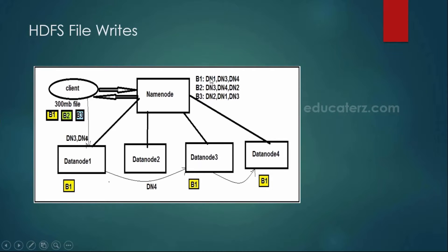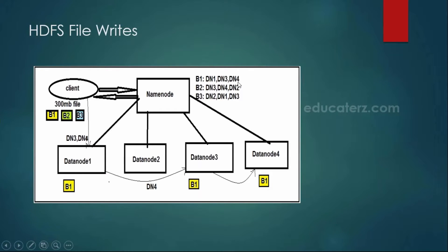Once the client receives the block information from the name node, the client's responsibility is to directly connect to the data nodes. It connects to DN1 and also lets data node 1 know about where the other 2 replicas will be stored. As per the block locations, the other 2 replicas will be in DN3 and DN4, so the client passes that information to data node 1.